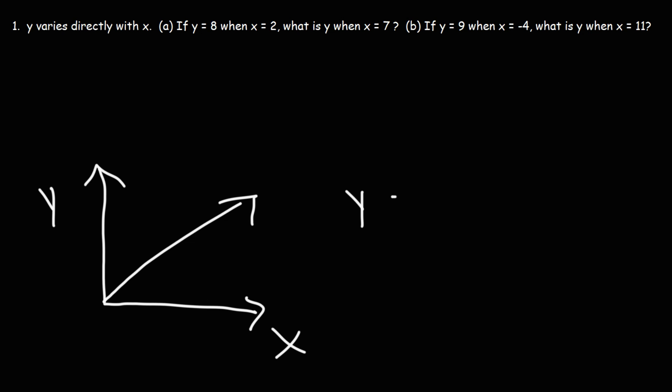The equation that corresponds to it is Y equals KX. As X increases, Y will increase at a proportional rate. K is known as the constant of variation. If you want to calculate K in this situation, it's simply Y divided by X.